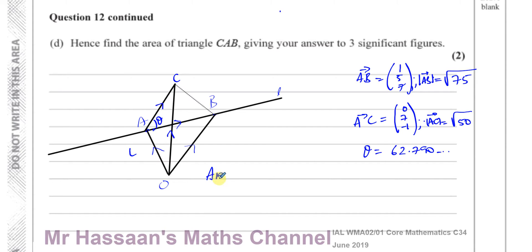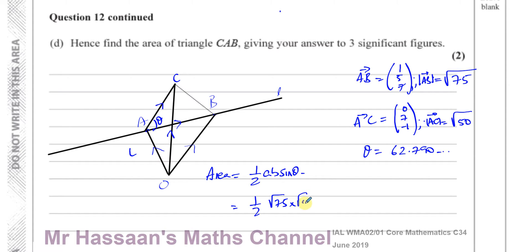So we can say the area is given by a half times AB times sine theta. That's a half times the magnitude of one of the vectors, which is going to be root 75, times the magnitude of the other vector, which is root 50, times the sine of the angle between them, which is the sine of 62.790 degrees — using a more accurate form — and that should give us the area of this triangle ABC.